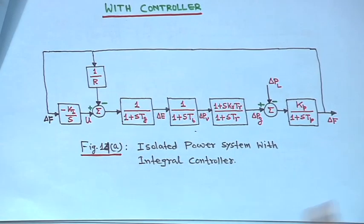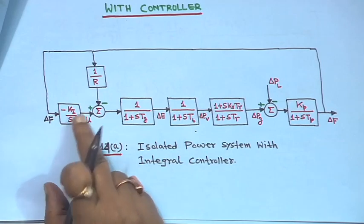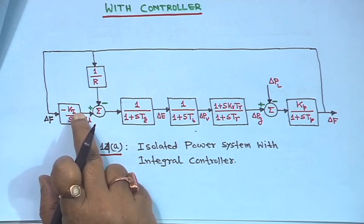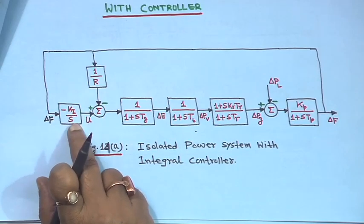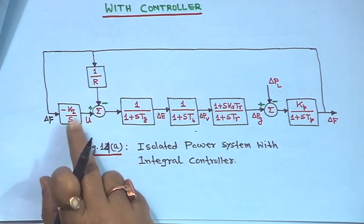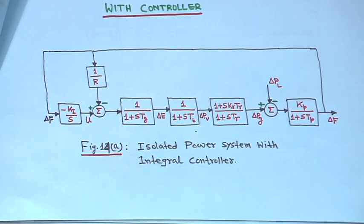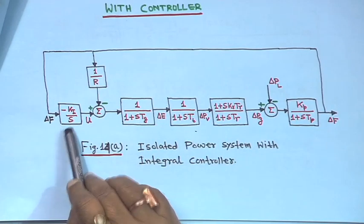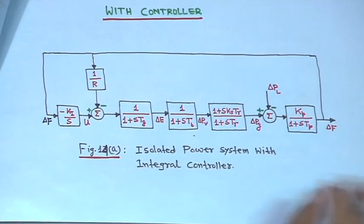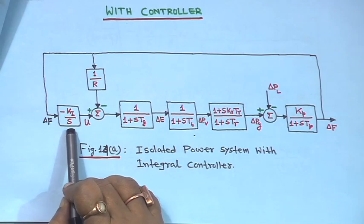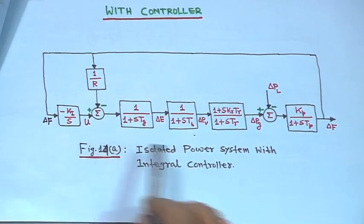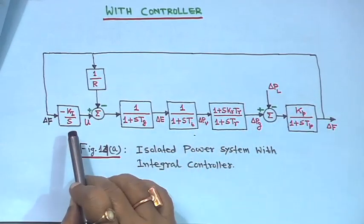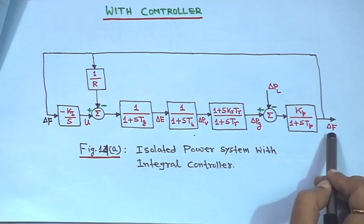With a controller present we cannot apply the simple steady-state formula — we must use the final value theorem. We take only an integral controller, u(s) = −k_i/s, where k_i is positive. The minus sign is included so that k_i can be a positive value; without it the system would become unstable.